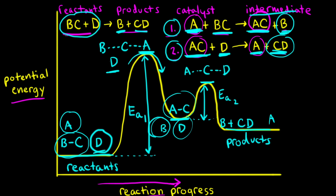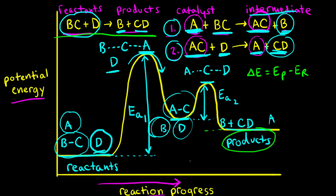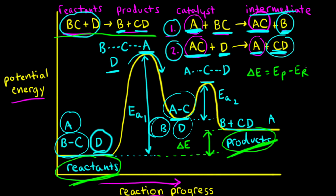Finally, let's find the overall change in energy for our reaction. Delta E is final minus initial — the energy of the products minus the energy of the reactants. Representing delta E on the graph, it is the difference in energy between these two lines. Since the energy of the products is greater than the energy of the reactants, we are subtracting a smaller number from a larger number, and therefore delta E is positive for this hypothetical reaction. Since delta E is positive, we know that this reaction is an endothermic reaction.